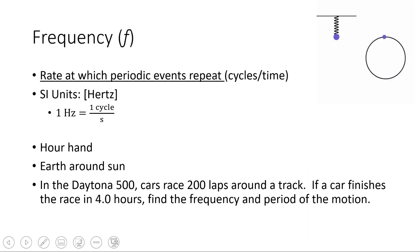As a complement of period, we have frequency. We use the letter F, lowercase f, for frequency. It's a variable. Frequency is the rate at which periodic events repeat. We can think of it as the number of cycles per unit time. Unlike period, it has a named SI unit. The unit is hertz, and one hertz is equal to one cycle per second.